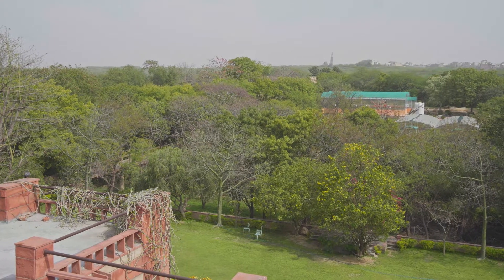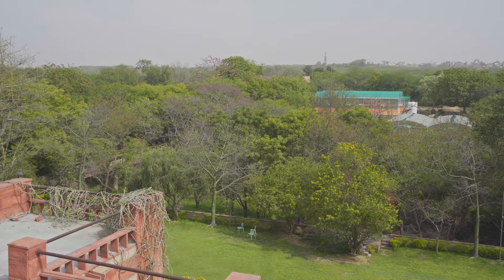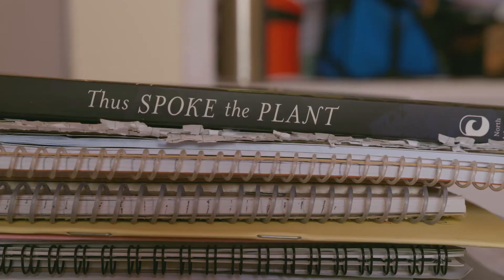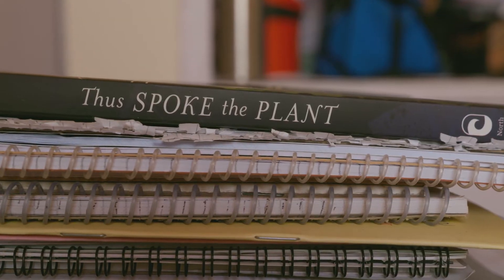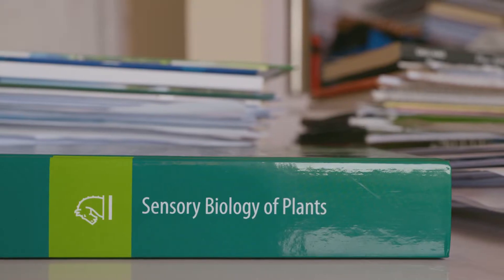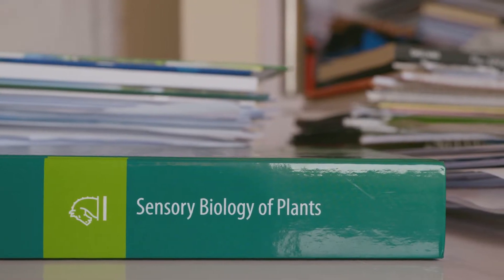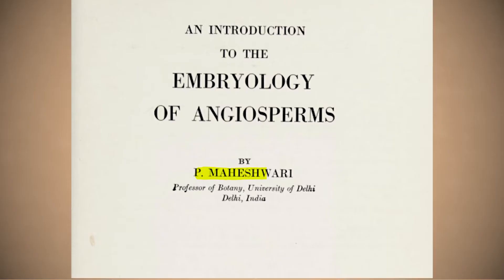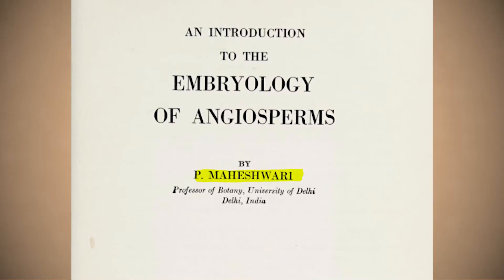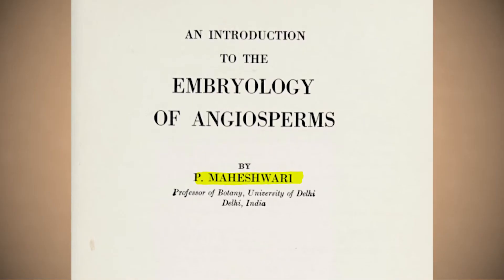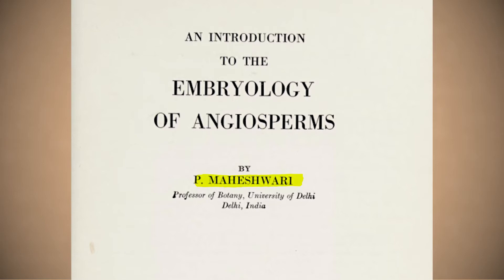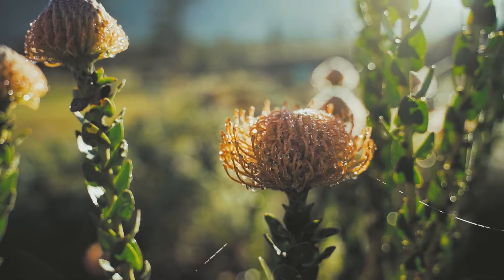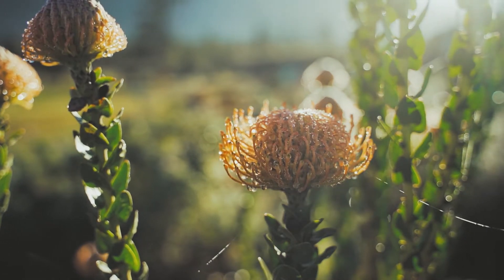In the 1960s, before the advent of genetic engineering, Professor Shipra Guha Mukherjee was an embryologist at Delhi University. She worked in the unit established by Professor P. Maheshwari, the eminent botanist who pioneered the classification of plants and application of embryology in India.